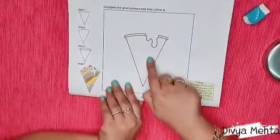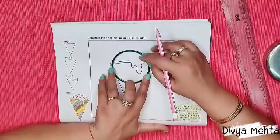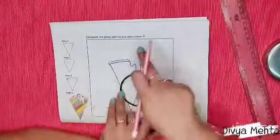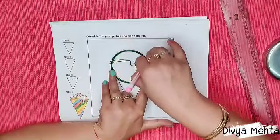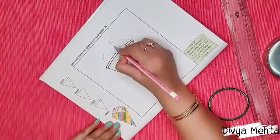So as you can see half cone is already drawn here. So we will complete the rest of the part. I am using a bangle for sketching the upper part.